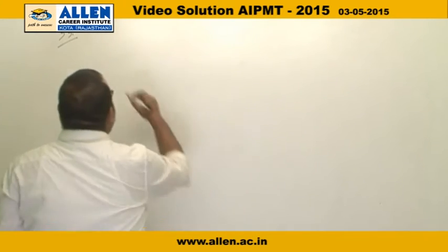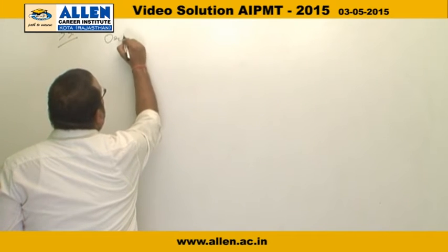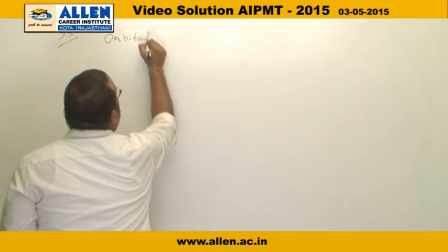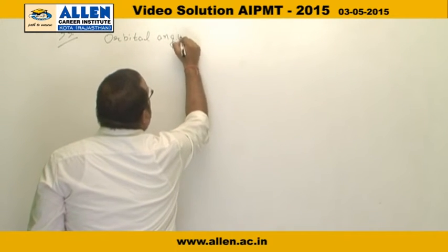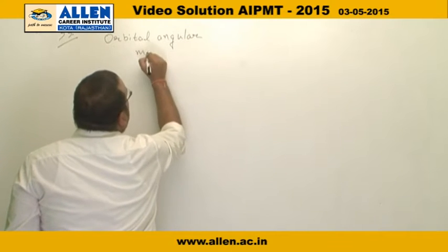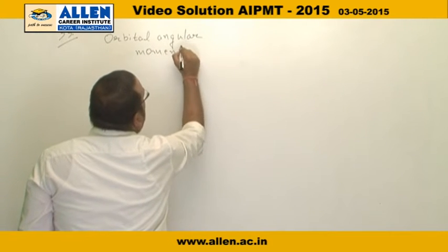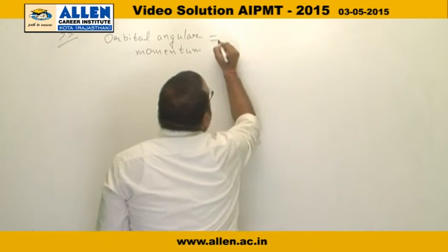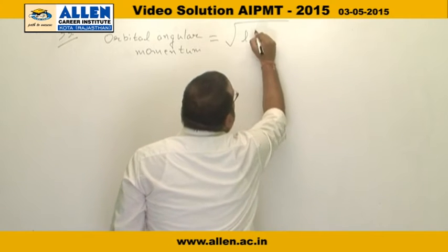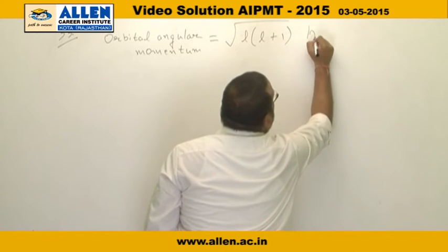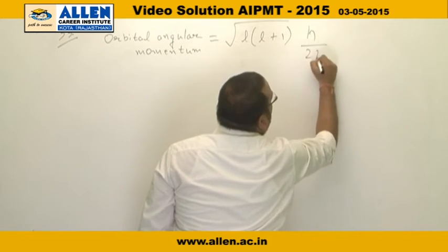As we know, orbital angular momentum is given by the formula: square root of l(l+1) multiplied by h upon 2π.